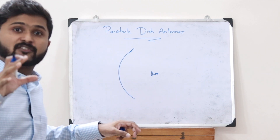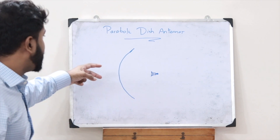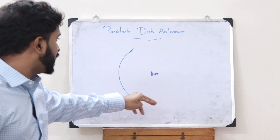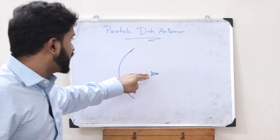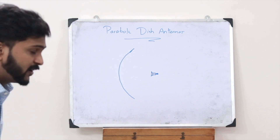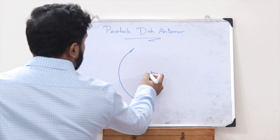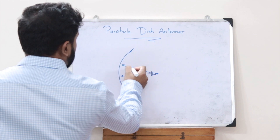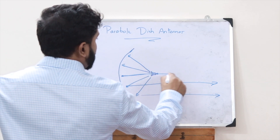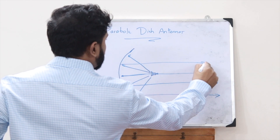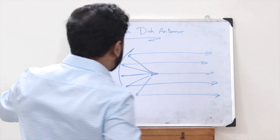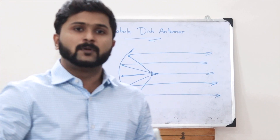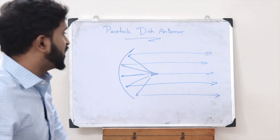This point source emits the electromagnetic radio waves that have to be transmitted with the help of this parabolic dish antenna. When these electromagnetic radio waves fall on top of this parabolic reflector, parallel rays are obtained which are reflected from this parabolic reflector.